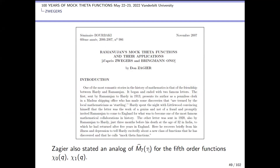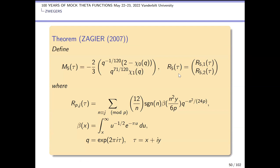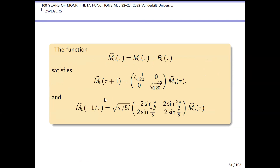Zagier also states an analog for the fifth order functions chi_0 and chi_1. In a lot of ways chi_0 and chi_1 are much nicer than the f_0's and F_0's and F_1's. Here's the result: here's the holomorphic part, here's the non-holomorphic part — this part is easy — but tau going to -1/tau has this nice matrix of sines.